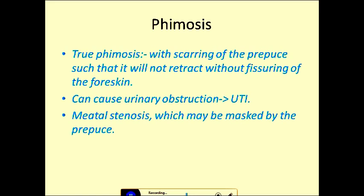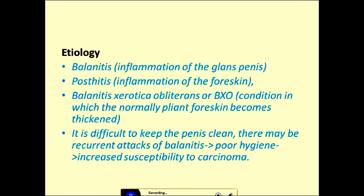In false phimosis there are slight adhesions between the prepuce and the glans, which usually do not require any treatment. True phimosis involves scarring of the prepuce so it will not retract without fissuring of the foreskin. In children it can be retracted and does not require treatment. Phimosis can cause urinary tract infection, urinary obstruction, and meatal stenosis, which can be missed as a diagnosis.